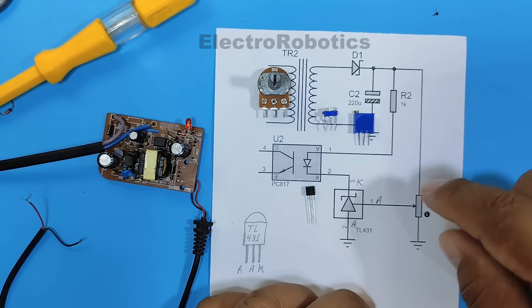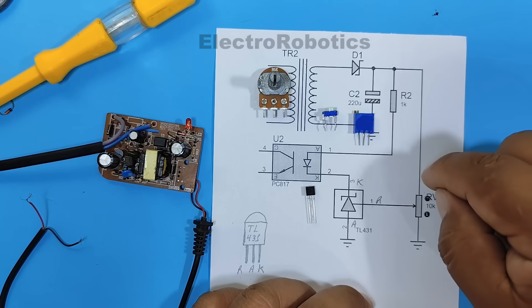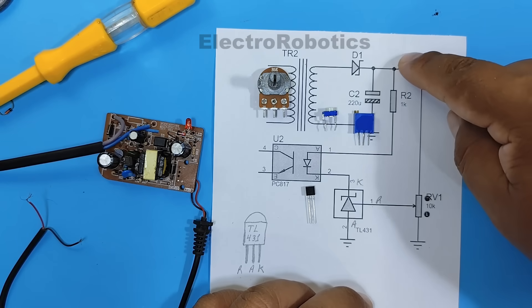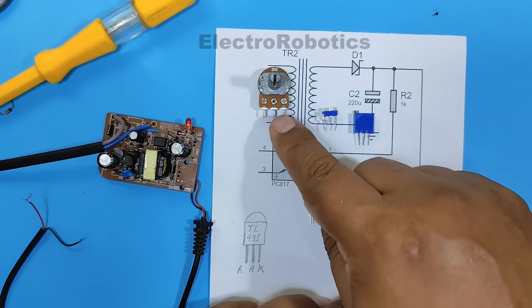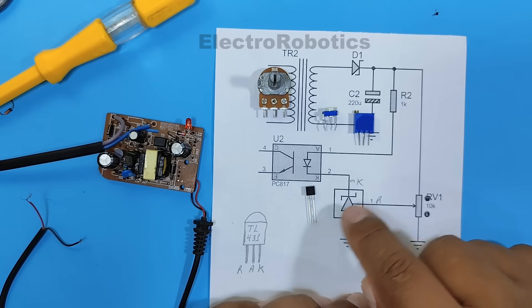The potentiometer connections would be as follows. Pin 1 connects directly to positive. Pin 3, or the other end, would go directly to negative. And the center pin, or pin 2, would go directly to pin one of the TL431.